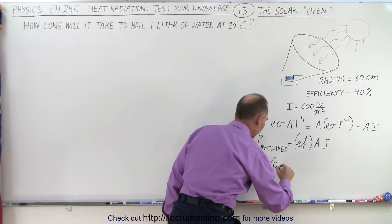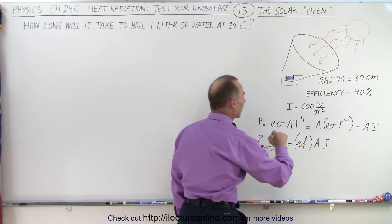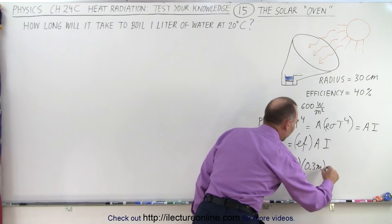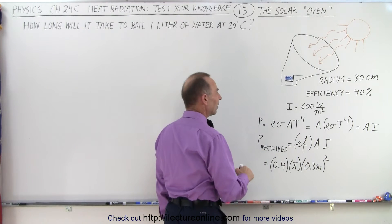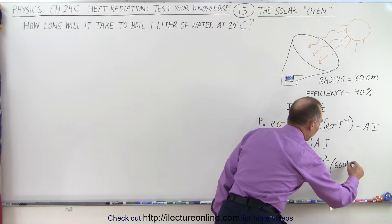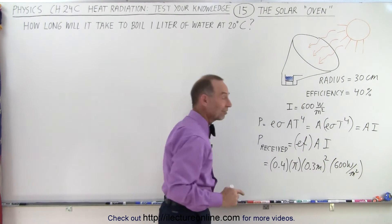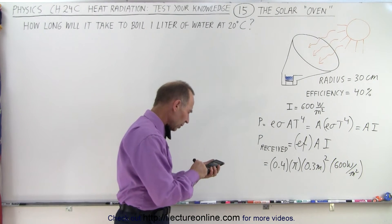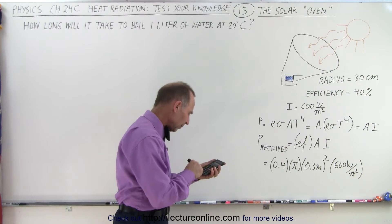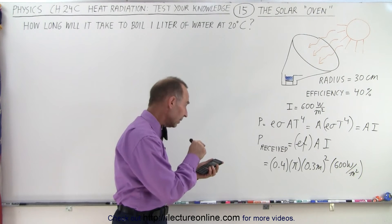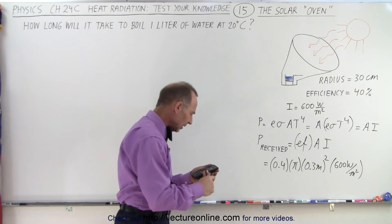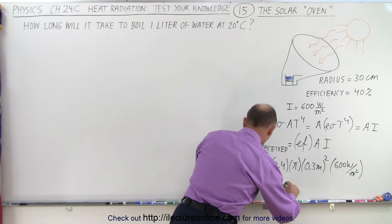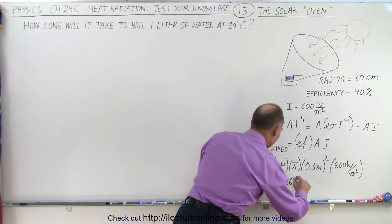So that's the amount of energy per unit time that we're receiving from the sun using that particular type of oven. So this is equal to 0.4 times the area, which would be π times the radius squared, which is 0.3 meters. And we have to square that. And then the intensity is equal to 600 watts per square meter. Notice the square meters cancel out and we're left with watts. So that would be 0.4 times π times 0.3 squared and times 600 equals 67.86 watts.